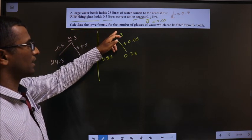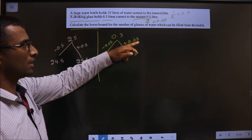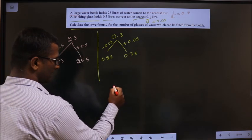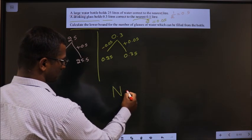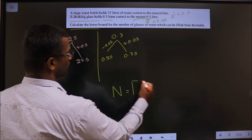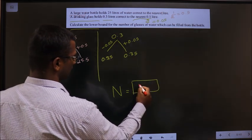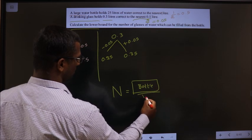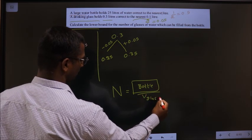Calculate the lower bound for the number of glasses of water which can be filled from the bottle. To get the number of glasses from the bottle, I should divide by the volume of the glass.